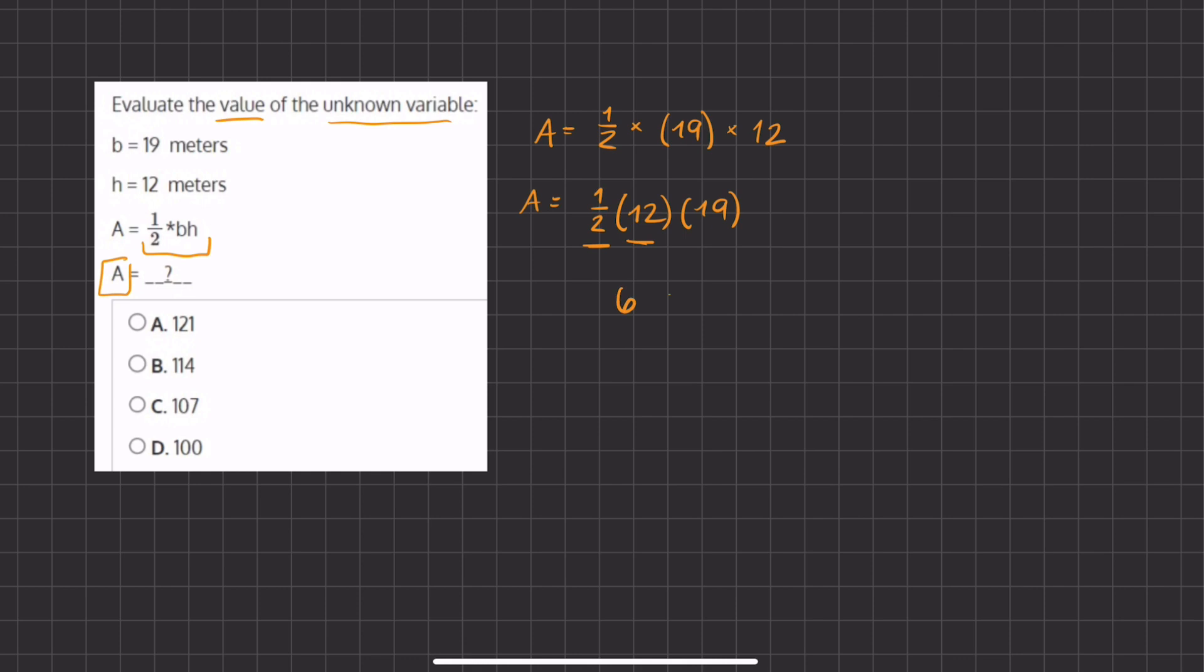So now a half times 12 gives us 6 times 19, which all equals A. Now if you don't know what 6 times 19 is, we can break up this 19 into 10 and 9 and multiply the 6 into both of the numbers and add. So we have 6 times 10 and we have 6 times 9.